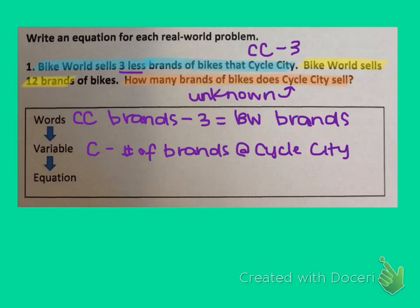So if the number of brands at Cycle City is our unknown, and we're using C to represent that, we can say C minus three equals the number of Bike World brands. And if we look in the problem, we're told that that is 12. So our equation is C minus three equals 12.